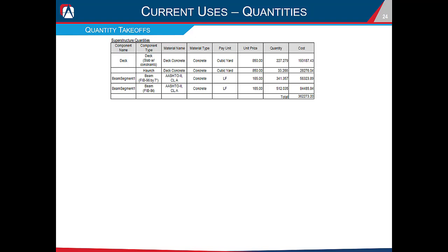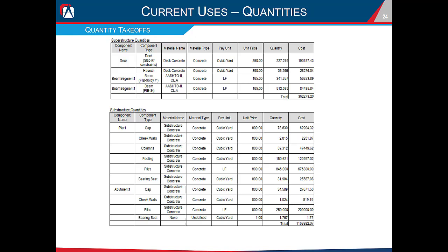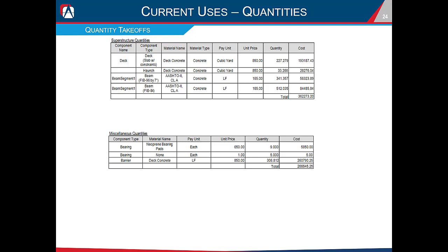The last main current use for OBM is quantity takeoffs. OBM does a very good job of breaking down quantities into different categories: superstructure quantities broken out by deck and haunch concrete, beam lengths, and diaphragms; substructure quantities broken out by cap, column, footer, cheek wall, beam seats, and piles; and miscellaneous quantities such as bearings and barrier wall. OBM also has a customizable material library that can be cost-loaded to produce quick cost estimates.